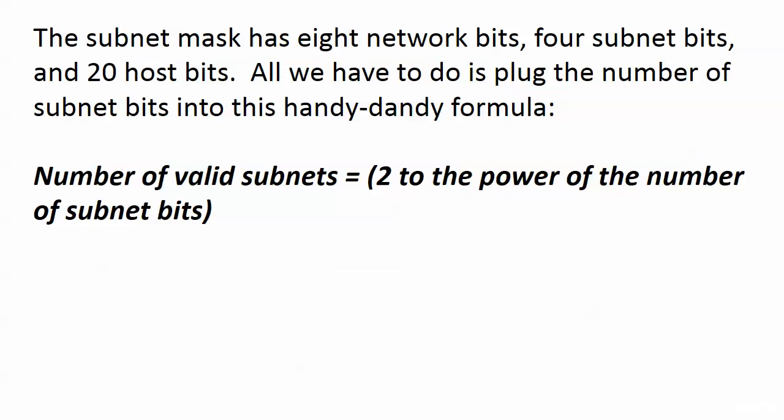So what, you ask? Well here's why we care. Because we have to plug the number of subnet bits into this handy dandy formula, and I hesitate to call it a formula because that makes it sound complicated. It's not complicated at all. The number of valid subnets equals 2 to the power of the number of subnet bits. So how many subnet bits do we have? We have four. Two to the fourth power is the number of valid subnets.